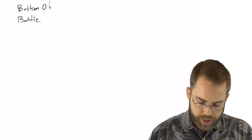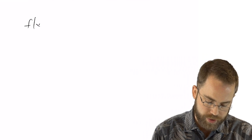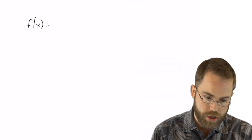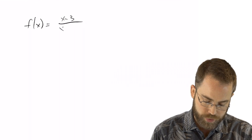You need to think about: when is the top equal to zero, when is the bottom equal to zero, and who wins in the battle of top versus bottom — numerator versus denominator. So let's talk about an example problem. If we have f of x equals x minus 3 over x minus 4.